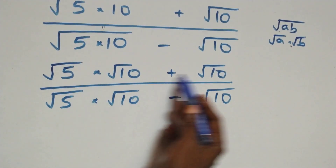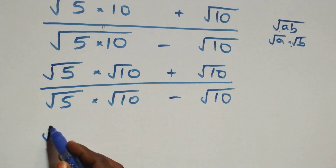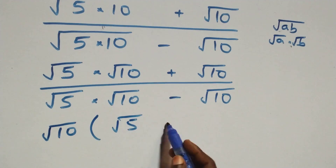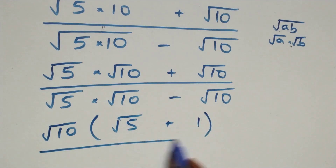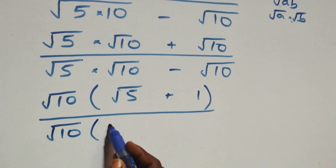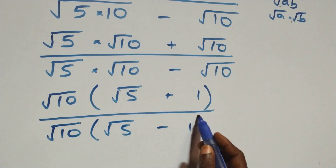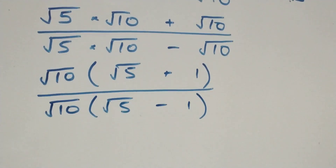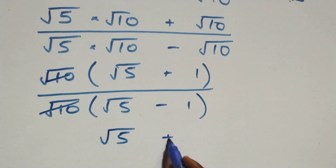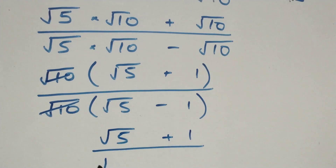Now we factor √10 out of both the numerator and denominator. The numerator becomes √10(√5 + 1), and the denominator becomes √10(√5 − 1). The √10 cancels, leaving us with (√5 + 1) / (√5 − 1).